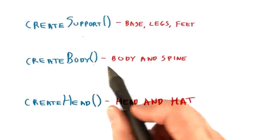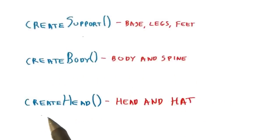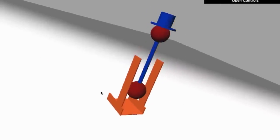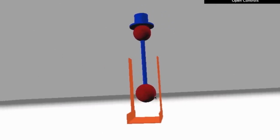The function create body will create the bird's body and spine. The function create head will make the head and hat. You have to create the objects in the correct location and add them to the scene. When you've done that, you'll see the model of the drinking bird, just like it's shown here.